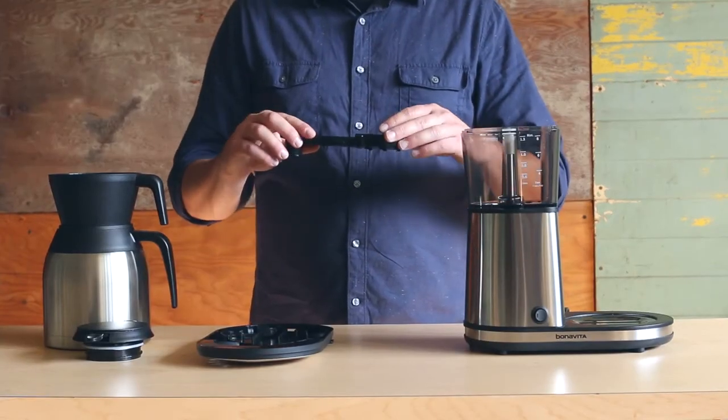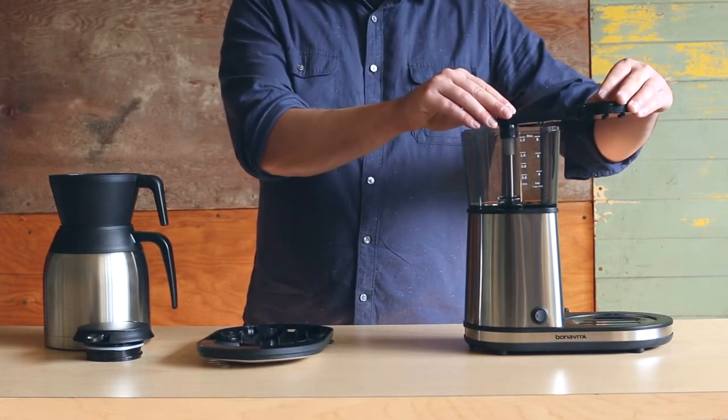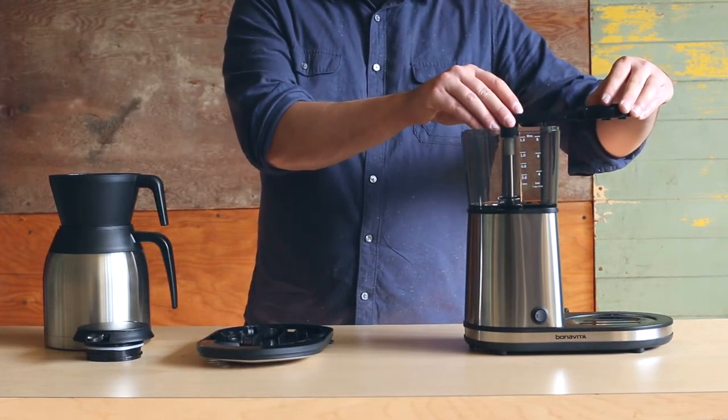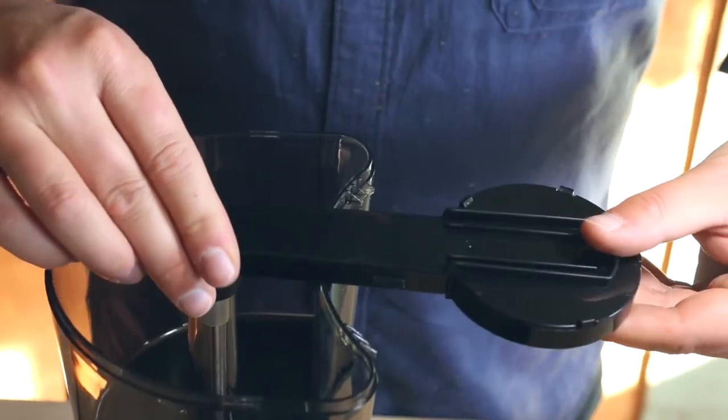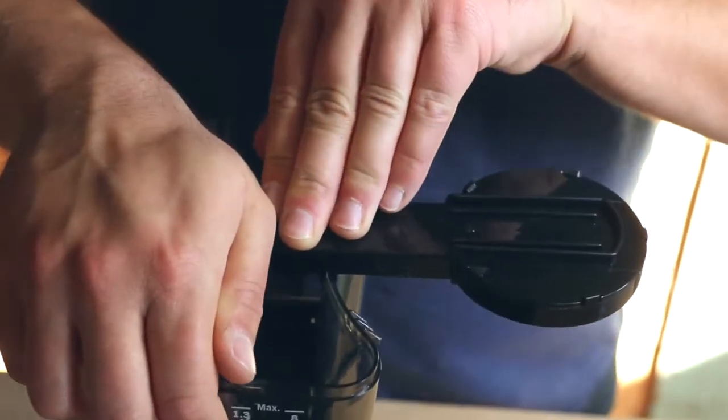Take the shower head piece with the head face down and attach the opposite end to the tube inside the water reservoir, lining it up with the grooves. Push it down until it sits firmly in place.